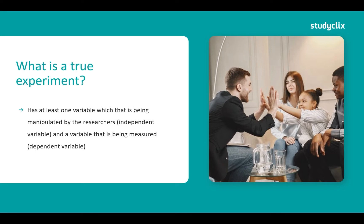Now it is easy to assume that every independent variable in every experiment would be manipulated by the experimenters. However, it is important to consider that when we study mental health disorders like depression or anxiety, we can't really manipulate these because we can't give someone depression or anxiety, and if we could it is certainly not ethical and would not pass the ethics board. So in those cases we need to find a sample of people who have depression and then implement our intervention.